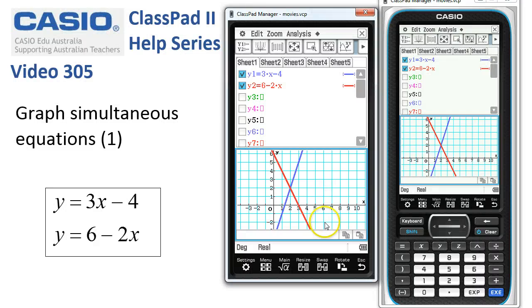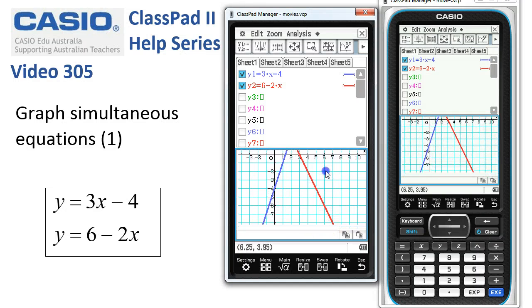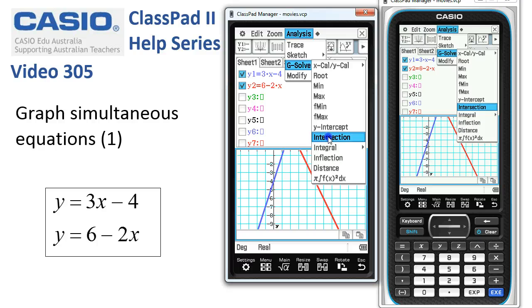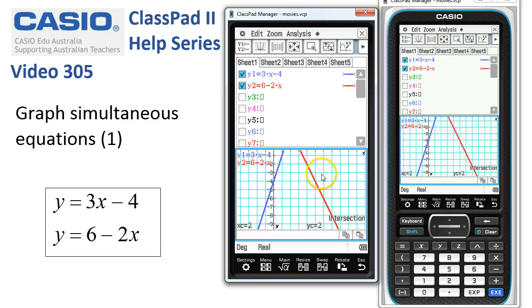If I move it back, now if I have the point of intersection off screen but within the domain that we've set here on our x-axis, ClassPad will find it when I choose intersection. So it's always important to check that the point you're looking for is within the domain that's set up on the view window.